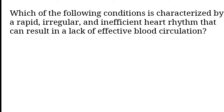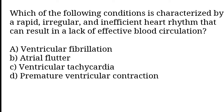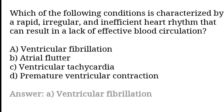Which of the following conditions is characterized by a rapid, irregular and inefficient heart rhythm that can result in a lack of effective blood circulation? Ventricular fibrillation, atrial flutter, ventricular tachycardia, premature ventricular contraction. So the correct answer is option A. Ventricular fibrillation.